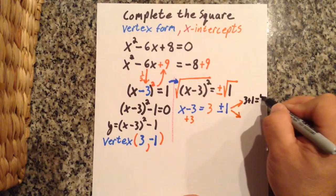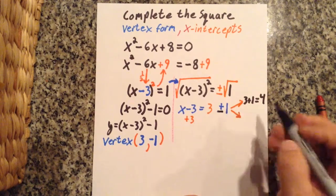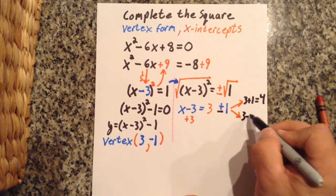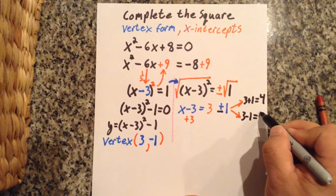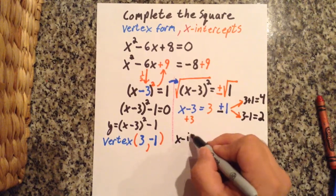And that's going to be one of my x-intercepts. And then the other situation is 3 minus 1, and 3 minus 1 that equals 2. So my x-intercepts are going to be...